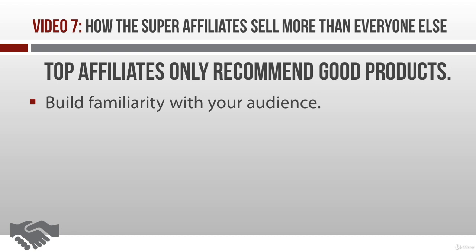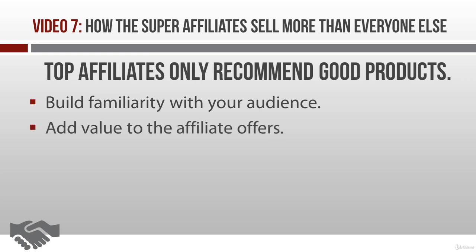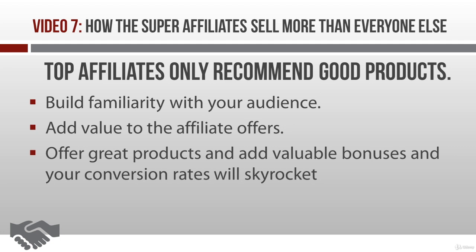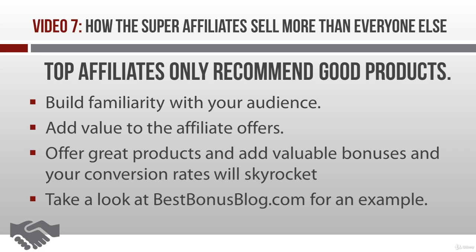The super affiliates know how important it is for people to know, like, and trust them, which is why they spend so much time building good relationships with their prospects. Another thing many top affiliates do to sell more products is add value to affiliate offers — meaning they offer free bonus products to anyone who buys through their links. If a prospect likes two affiliates and one of them offers a bonus product, smart customers want the most bang for their buck, so they'll buy from the affiliate offering extra swag. You can offer free ebooks, videos, access to membership sites, mind maps, worksheets, spreadsheets, infographics, software — whatever. Check out bestbonusblog.com to see how top affiliates boost conversion rates by offering bonuses.